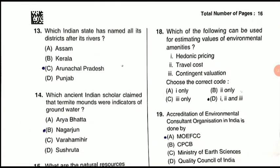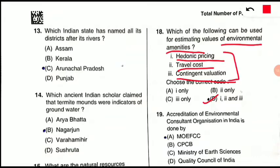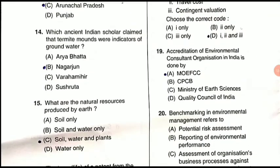Question 18: Which of the following can be used for estimating values of environmental amenities? The correct option is D — all three: hedonic pricing, travel cost, and contingent valuation are used for estimating the values of environmental amenities.